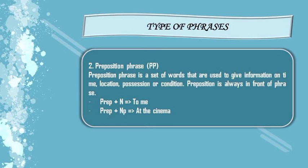Next is prepositional phrase, usually called PP. The keywords of PP are: preposition plus noun — for example, 'to me,' where 'to' is preposition and 'me' is a noun; and preposition plus noun phrase — for example, 'at the cinema,' where 'at' is preposition, 'the' is a determiner, and 'cinema' is a noun. So, a prepositional phrase is a set of words used to give information on time, location, position, or condition. The preposition is always an important part of the phrase.